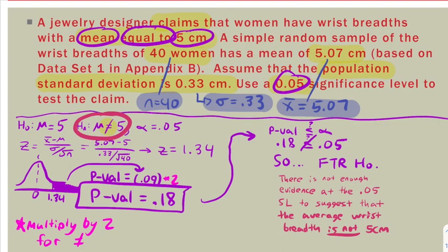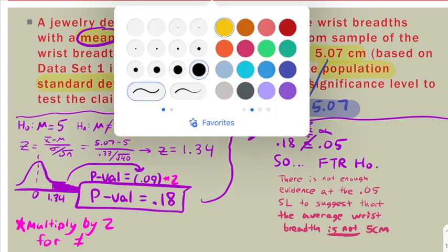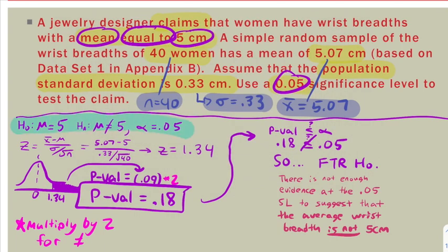And this is what a hypothesis test problem should look like. You need to show all the steps of finding the hypotheses, setting the significance level, finding the test statistic, getting your p-value, comparing the p-value to alpha, and then writing out your written conclusion.